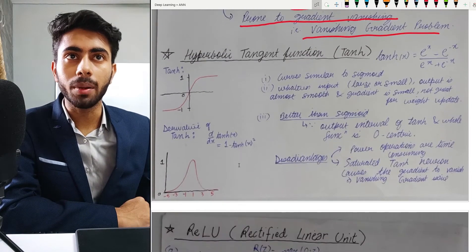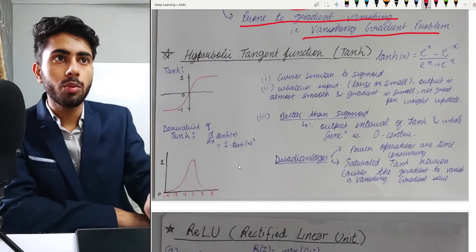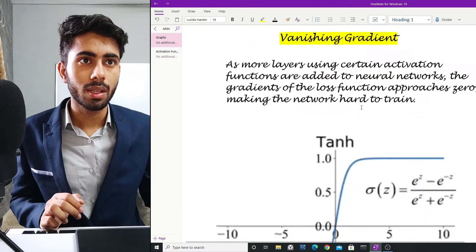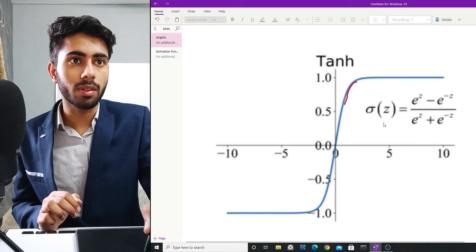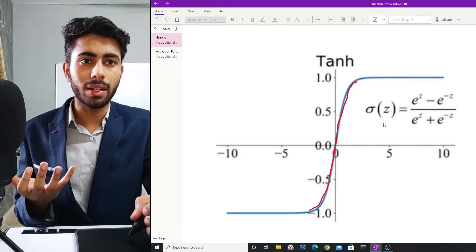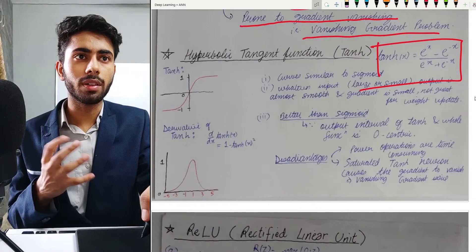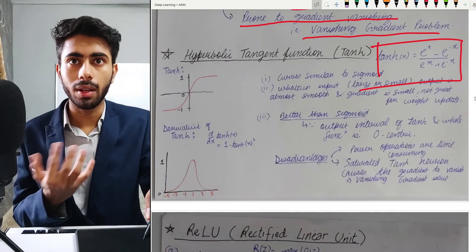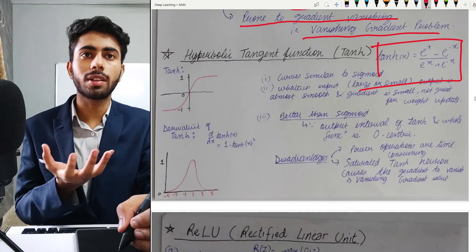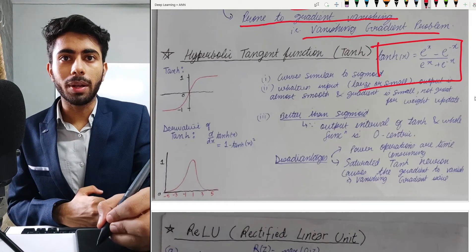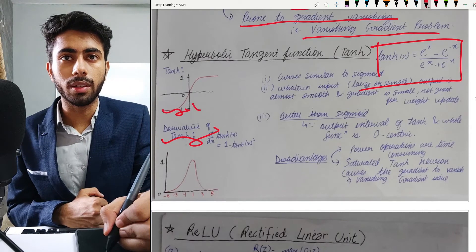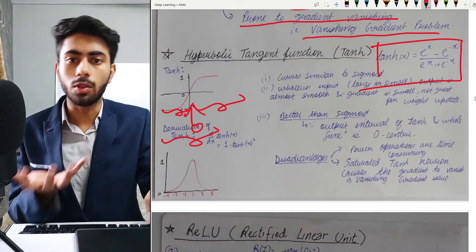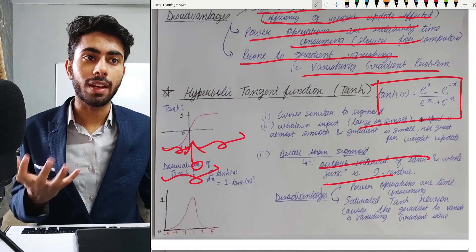The other activation function is the hyperbolic tangent function, or tanh, whose formula involves exponential terms. Its curves are very similar to sigmoid — also very smooth near zero — but the main difference is that tanh extends its output into negative values as well. Comparing it with sigmoid, tanh is considered slightly better because its output is zero-centric: since there are both negative and positive outputs, taking the mean gives approximately zero.